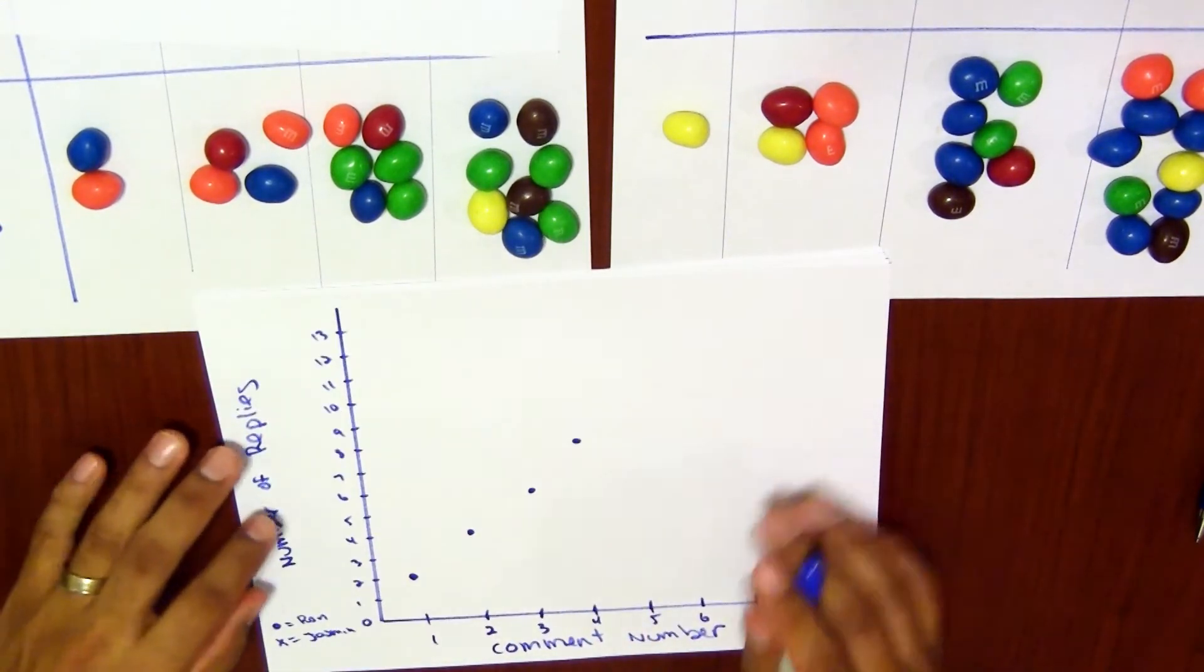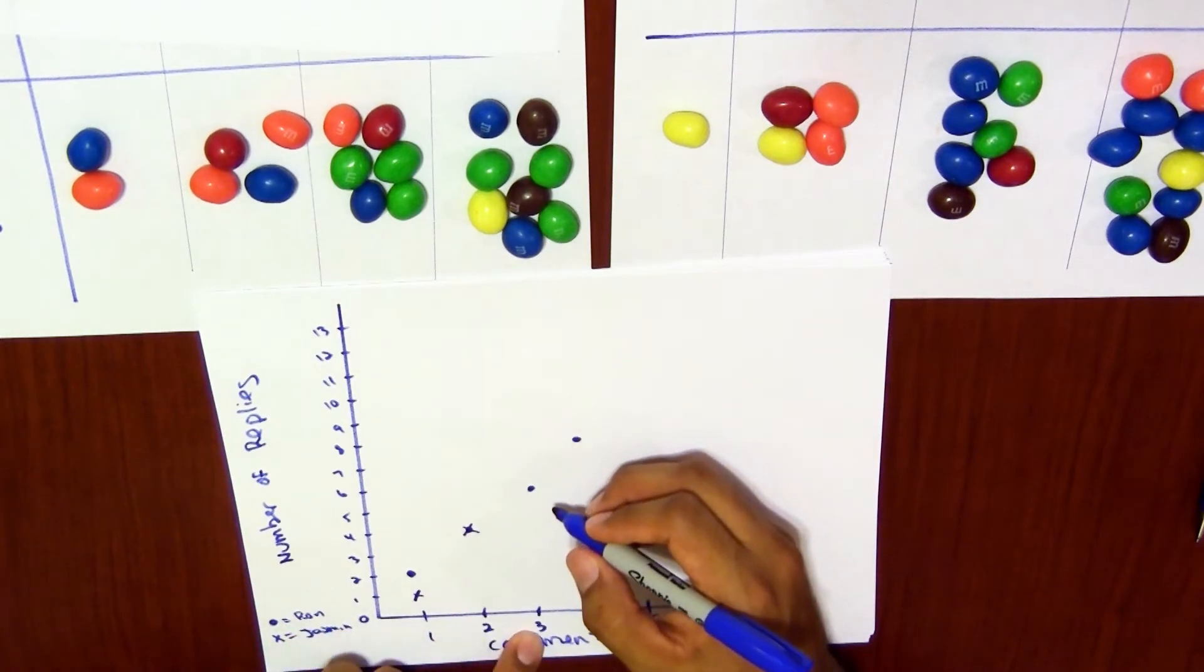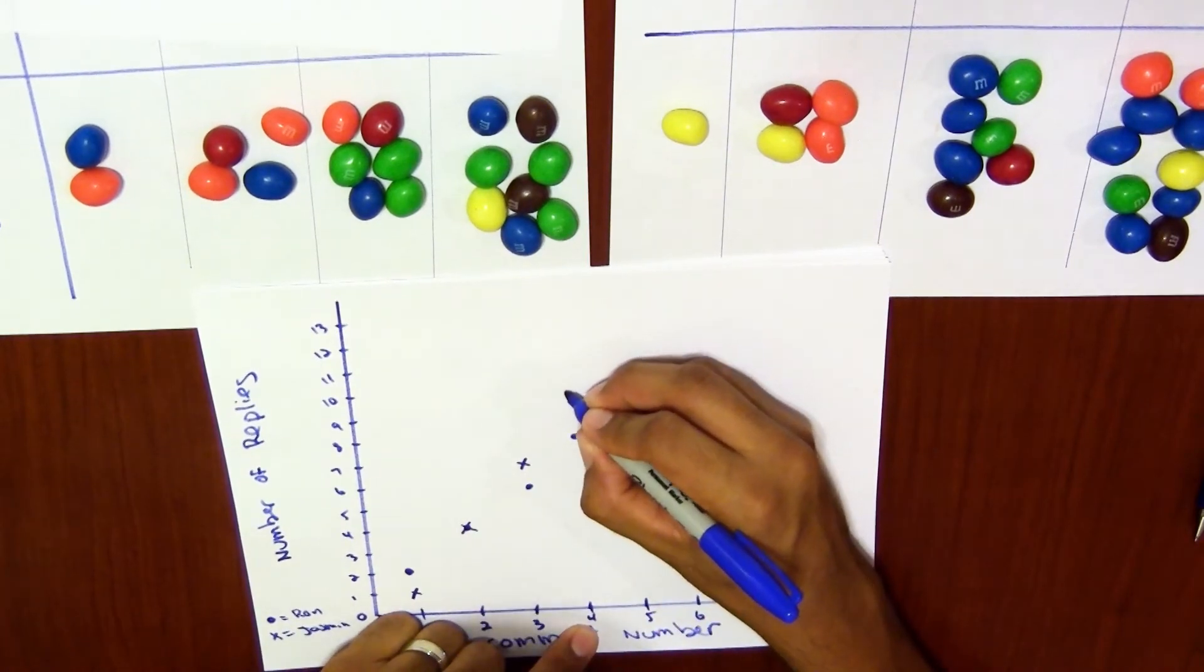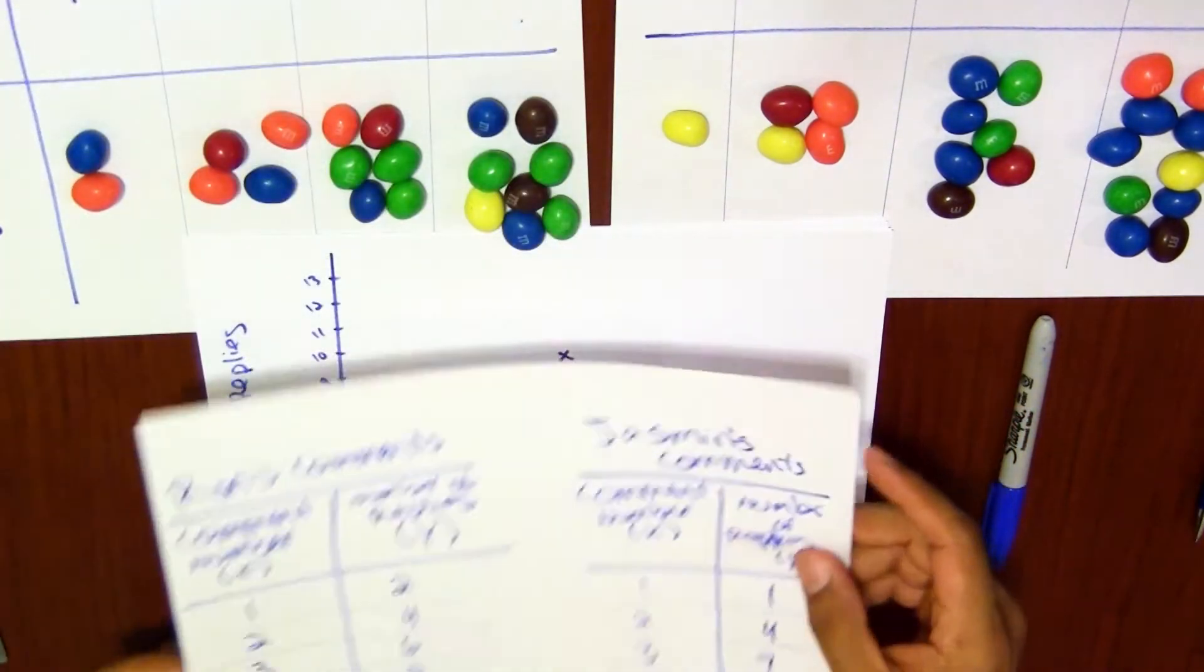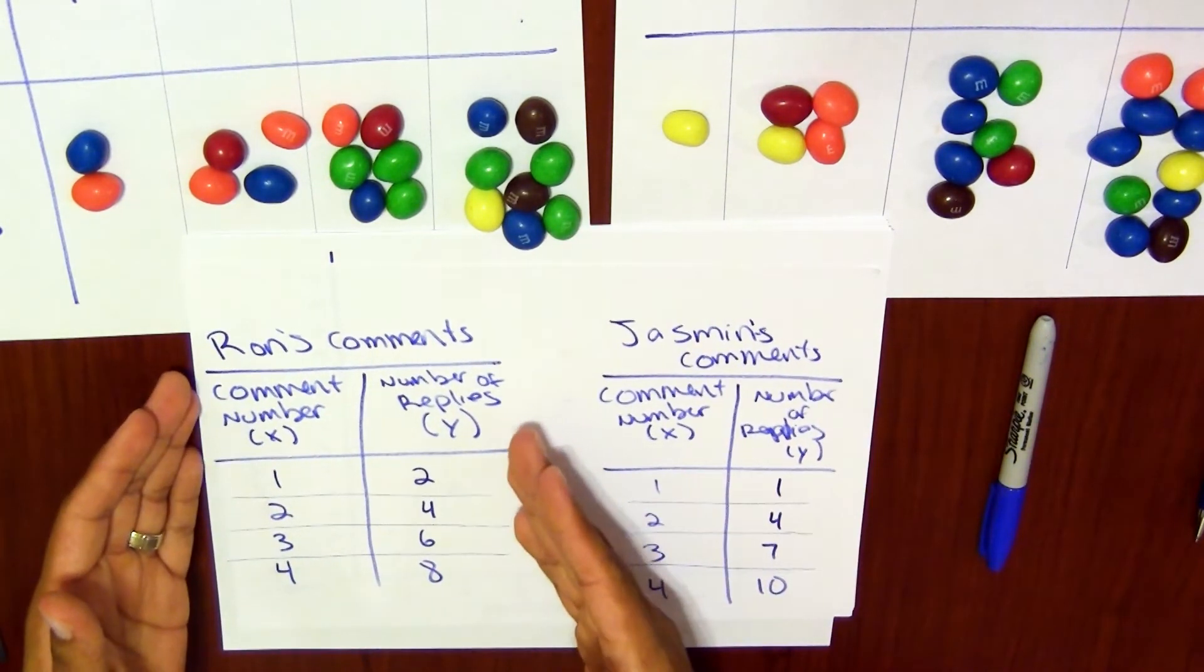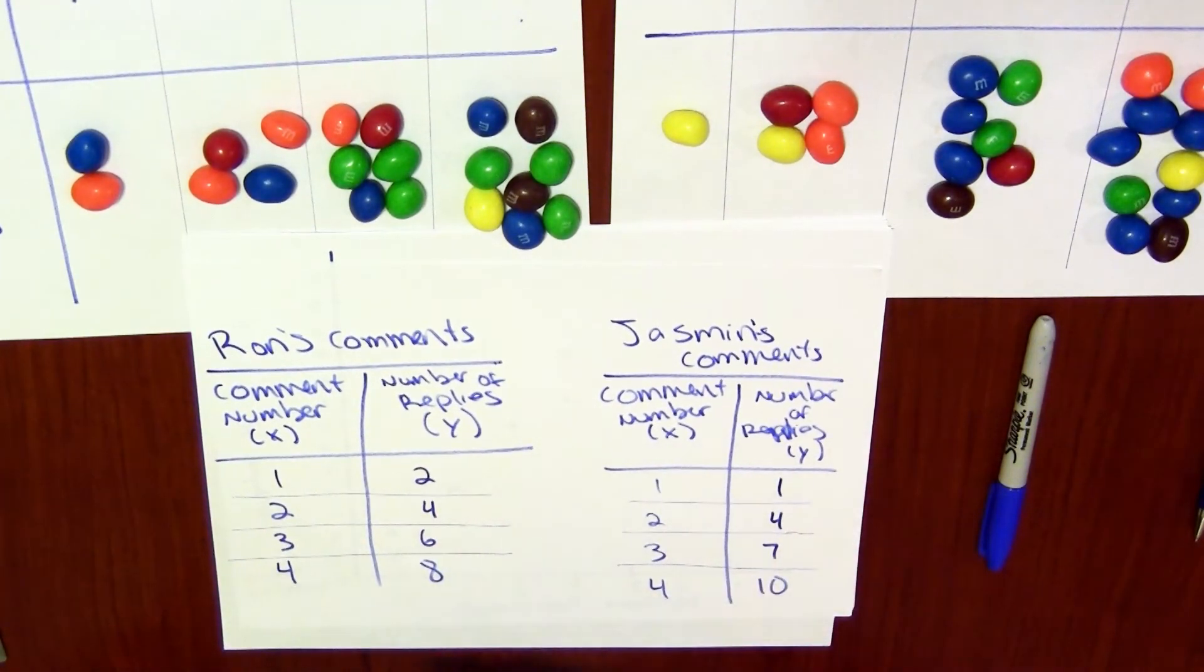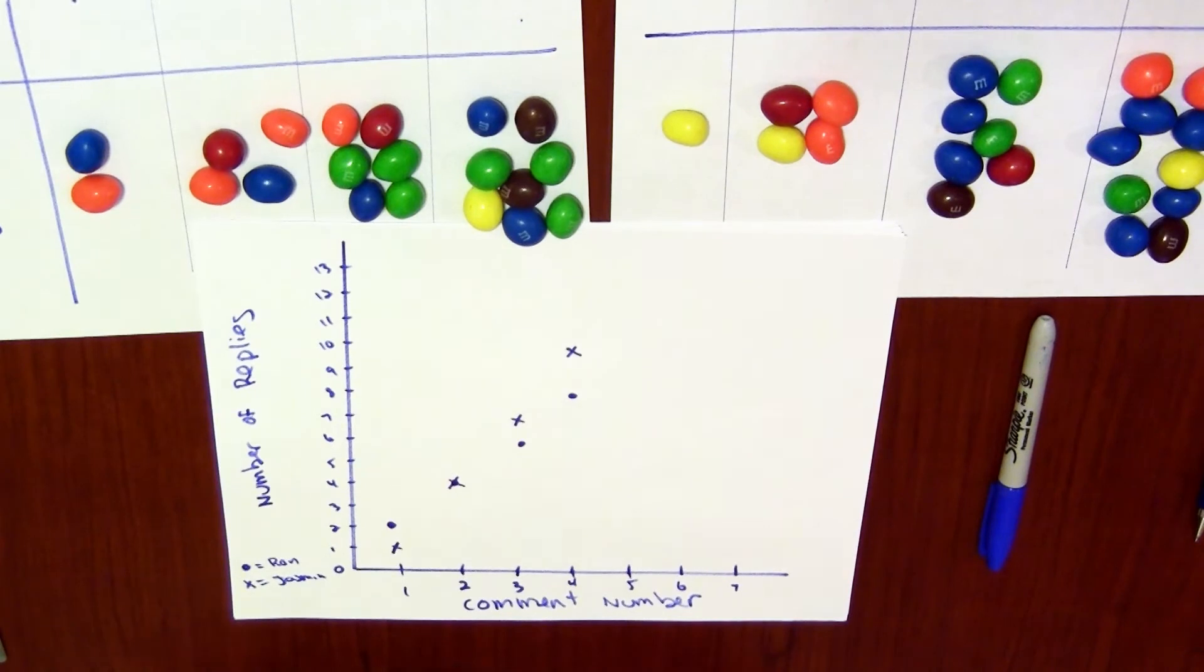And now Jasmine. All right, now these are the questions that you want to ask students. Describe any patterns that you see in the data, so you should see how the number of replies change for Ron compared to the replies for Jasmine. You can also ask them, once they've done this, to connect the points respectively for Ron and for Jasmine and describe the graph that they see.